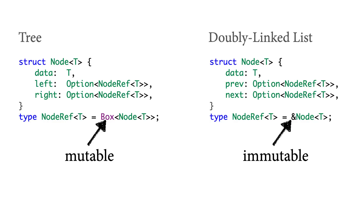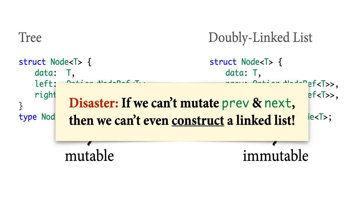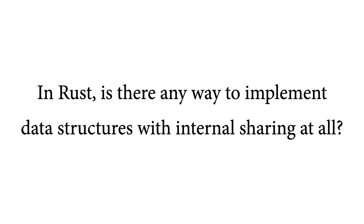The trouble is that if you were to naively make all the previous and next links in the doubly linked list into shared references, it would render the linked list type useless. Specifically, you can see on the left the tree type we showed before, and on the right the new doubly linked list type. The only difference is that we've changed the type of node links from the box type to a shared reference type. But in doing so, the links between nodes have all become immutable — you cannot mutate through these references. That's a disaster: if you can't mutate through these links, you can't even construct a linked list, let alone mutate it.